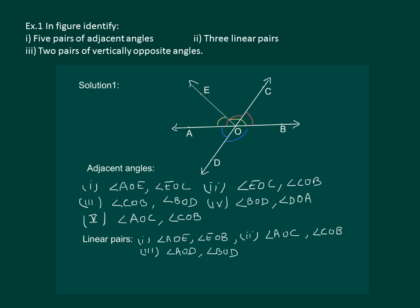Third part of the question is to identify two pairs of vertically opposite angles. It's very easy since we can see that AB and CD are the two intersecting lines, and hence angle AOD and COB are vertically opposite, and similarly AOC and BOD are vertically opposite angles.